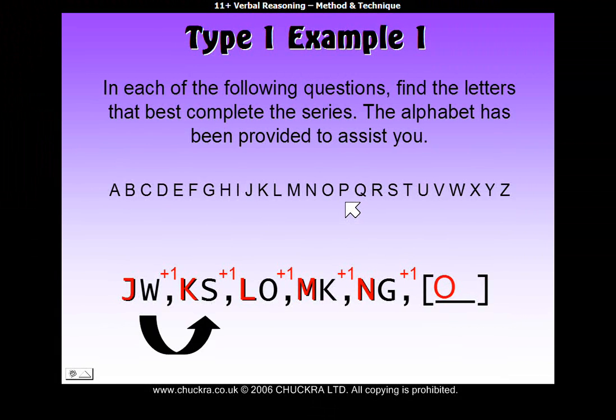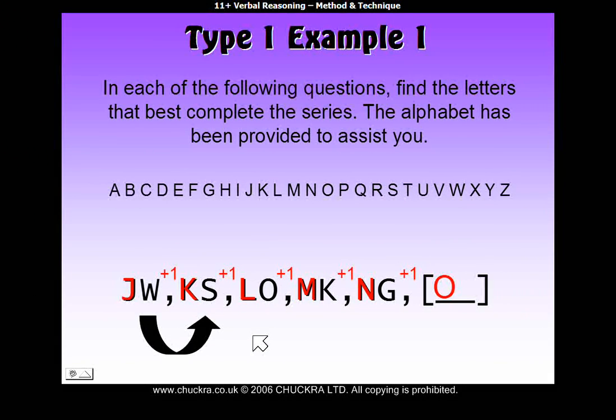Now, looking at the second letter of each pair, how do we get from W to S? Back to our alphabet line, starting on W, we're going back one, two, three, four. So, we write minus four, because we're going back four letters in the alphabet.